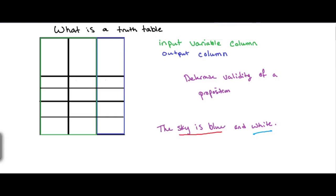So the sky is blue is going to be represented by the variable P. We're going to put P over here. And the sky is white is going to be represented by Q.